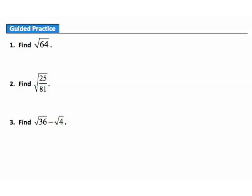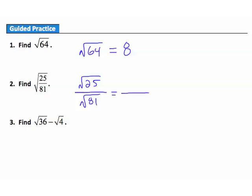Question 1: find the square root of 64. The square root of 64 — what number times itself gives 64? It's going to be 8. Question 2: find the square root of 25/81. We find the square root of each individually: the square root of 25 is 5, and the square root of 81 is 9, giving us an answer of 5/9.